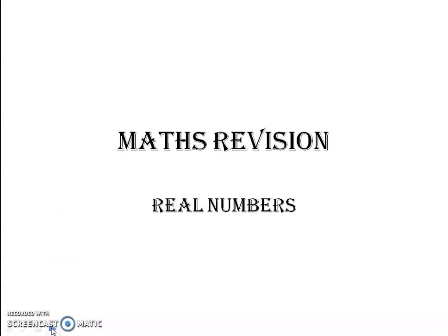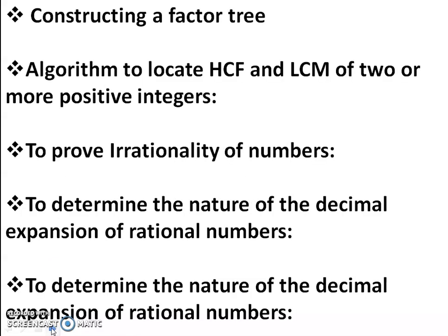Next is real numbers, the smallest chapter in your textbook. The deletion is Euclid's division lemma, which was important till last year but is not in scope this year. Important topics remaining are: constructing a factor tree, algorithm to find HCF and LCM of two or more positive integers — including the formula HCF × LCM = product of the two numbers — how to prove irrationality of numbers, and determining the nature of decimal expansion of rational numbers. In the next video, we will see sample questions from these chapters from the CBSE sample question paper.